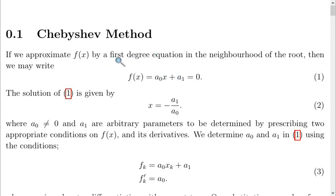We may write such a first degree equation as in equation one, where f(s) equals a naught s plus a1 equals to zero, assuming that s is the root of the equation. So by substituting s into the first degree equation, you have the expression equals to zero.